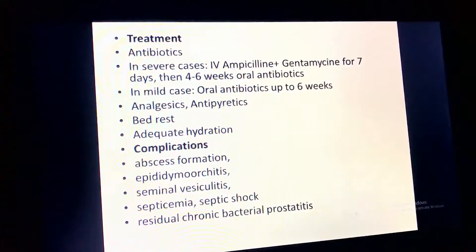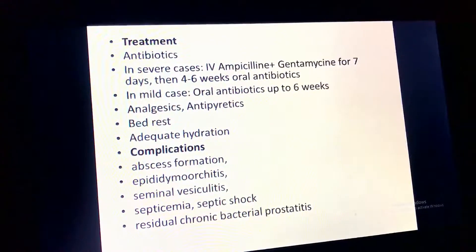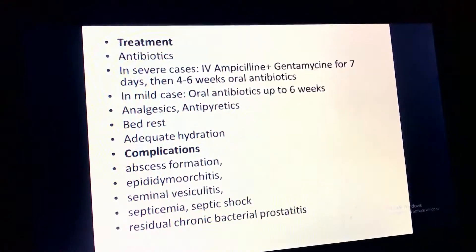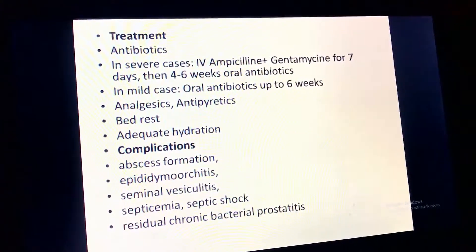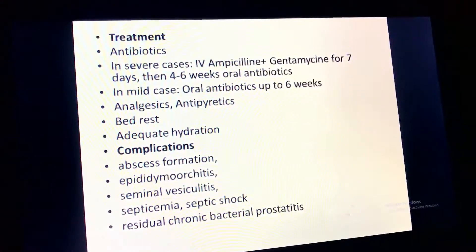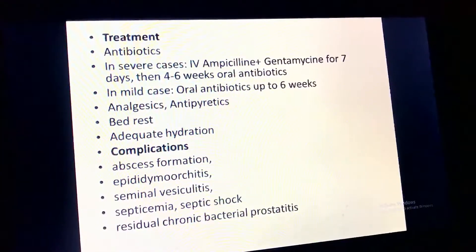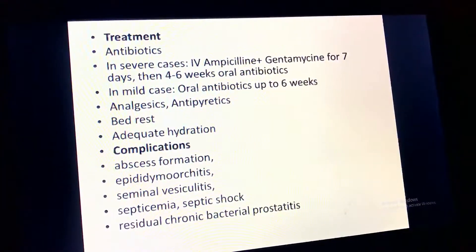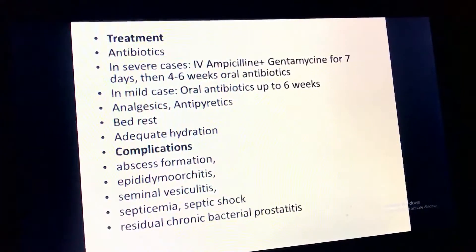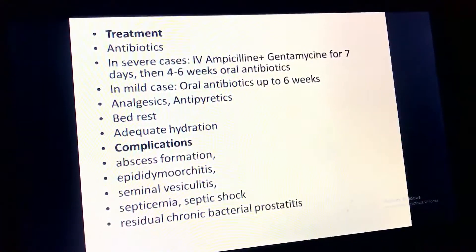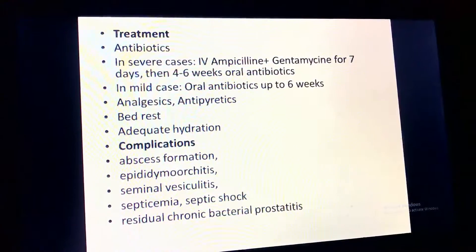Treatment for prostatitis: in severe cases, IV ampicillin plus gentamicin for seven days, followed by four to six weeks of oral antibiotics. In mild cases, oral antibiotics up to six weeks, analgesics for pain, antipyretics for fever, bed rest, and encouragement of adequate hydration. Complications include abscess formation, epididymo-orchitis, seminal vesiculitis, septic shock, and residual chronic bacterial prostatitis.